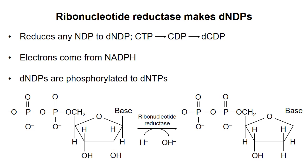The enzyme acts on ribonucleotides in the diphosphate form only, so CTP must first be dephosphorylated to CDP before it can be reduced. The ultimate source of electrons for the process is NADPH. After the deoxynucleotide diphosphates are synthesized, they are phosphorylated to the triphosphate form.